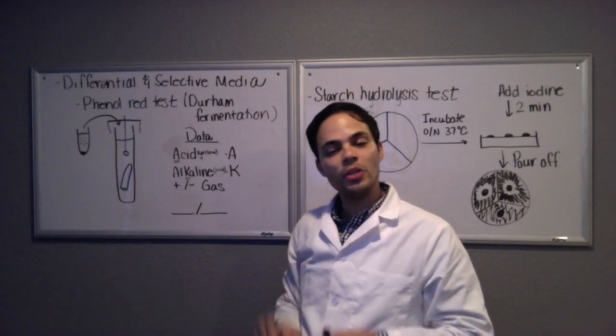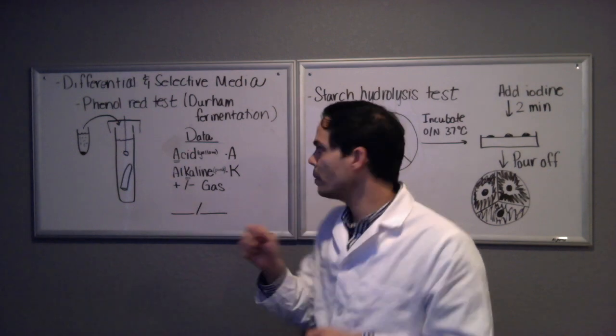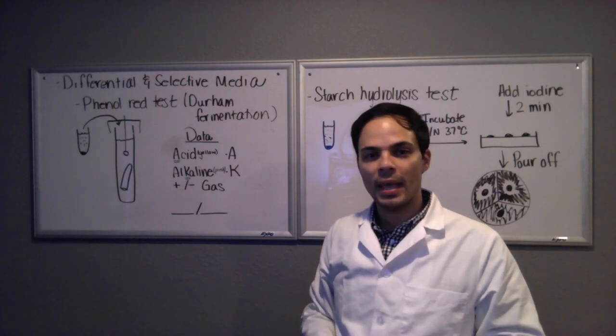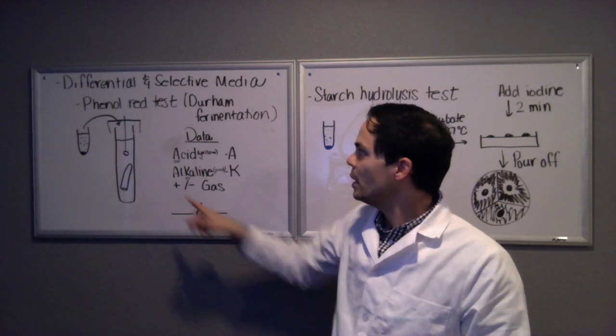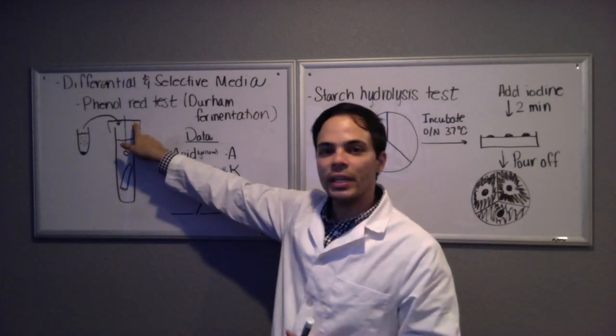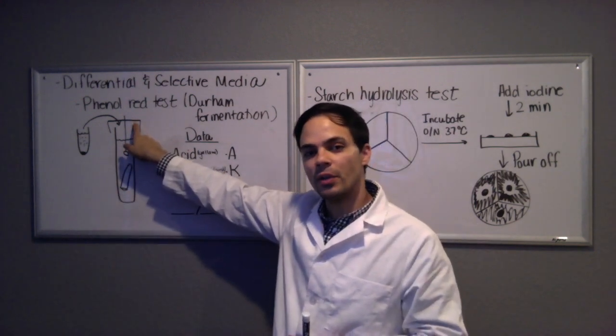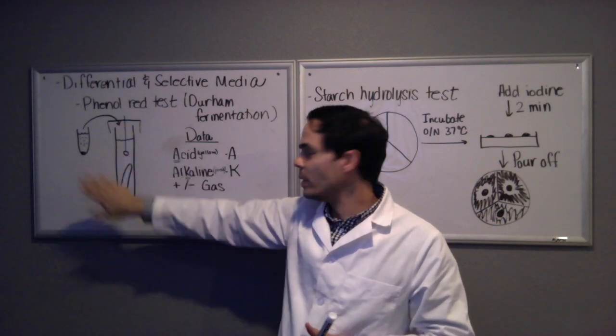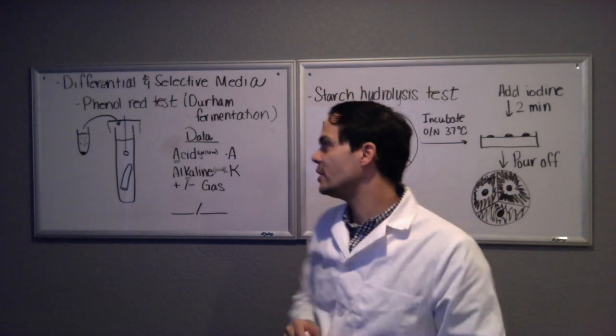When you label it, make sure you label the top here. You can use a piece of tape and if you do, make sure you dog ear the tape so it's easy to remove. You want to put your name, the date, the type of medium, and the name of the bacterium that you are inoculating with. Don't ever label the cap because if the cap should get separated from the base you will not know what's in that tube.